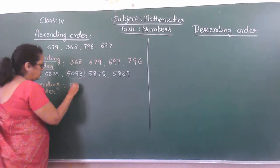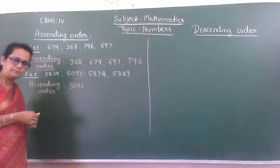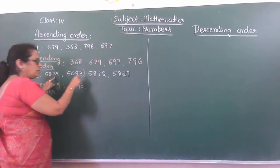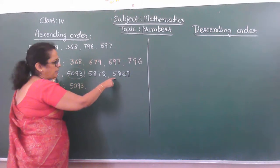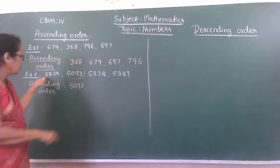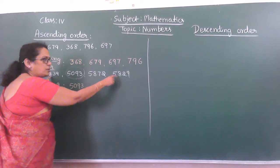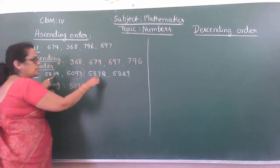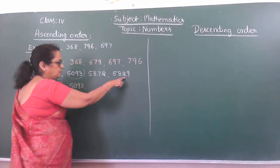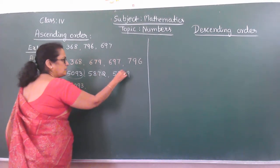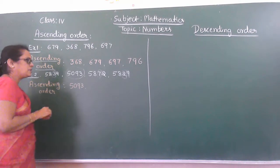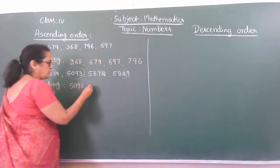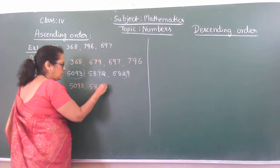So write 5,093 as the smallest number. The left over numbers are 5,839 and 5,829. Thousands place is the same, hundreds place value is also the same. So switch over to tens place. Here it is 3, here it is 3, here it is 7, and here it is 2. So which is the smallest one among 3, 7, 2? 2 is the smallest one. So the next number is 5,829.